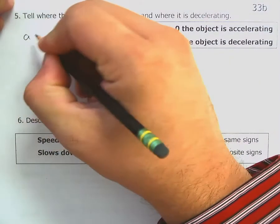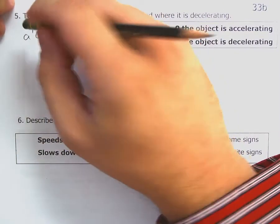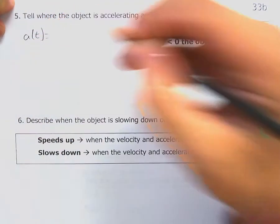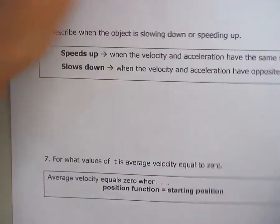So from the front here, A of T. Your acceleration, remember, I already found that on the front. 18T minus 81.